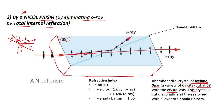This crystal is cut diagonally along this line, and it is rejoined again using a layer of Canada Balsam. Canada Balsam is a type of resin used for mounting thin sections — used as a glue.